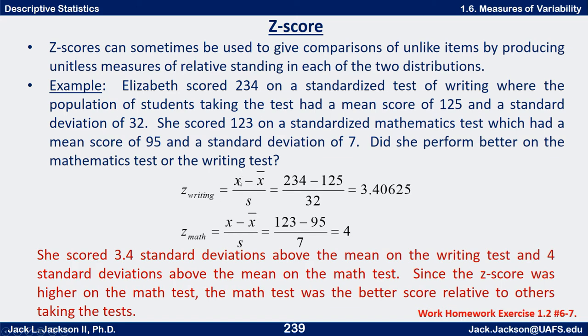The formula is x minus x-bar over s. For the writing, her score is 234 minus the mean of 125, divided by the standard deviation of 32. If you subtract first and then divide, that turns out to be about 3.4. The z-score for math is similarly computed: 123 minus 95 over 7, which equals 4.